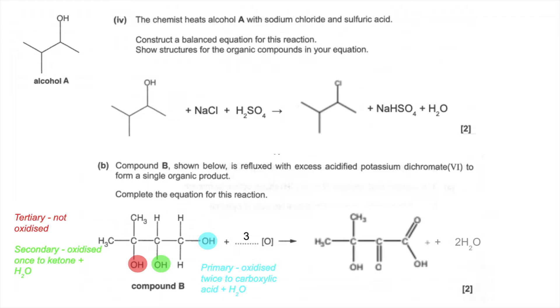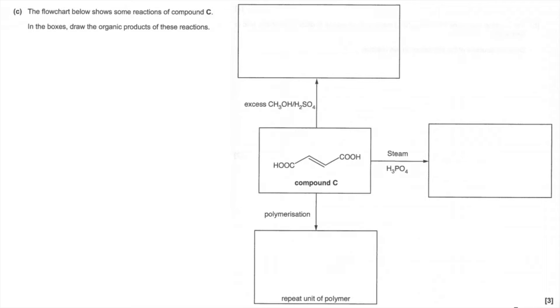So part C now. We've got this flow chart and we've got to consider the reactions of compound C with excess methanol and sulfuric acid, steam and phosphoric acid, and how does it polymerize. So we'll go up here first. So alcohol and sulfuric acid with carboxylic acid groups is obviously esterification, so these carboxylic acid groups are going to change to ester groups, and so we'll get that.